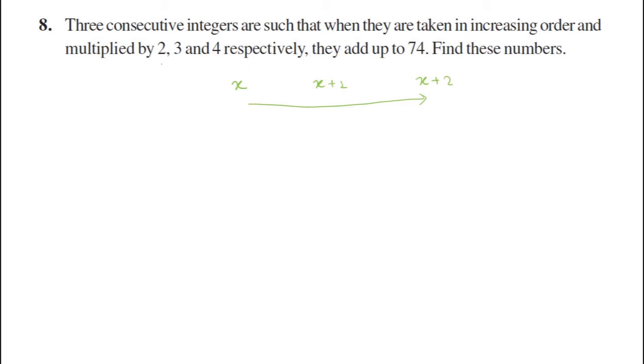Now in the order they are multiplied by 2, 3 and 4 respectively. Respectively means that x is multiplied by 2, x plus 1 is multiplied by 3, and this number is multiplied by 4. If we multiply then they add up to 74. So the first number multiplied by 2, second number multiplied by 3, and the third number x plus 2 multiplied by 4 gives the result as 74.